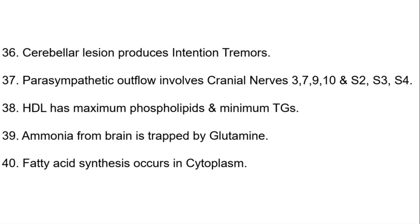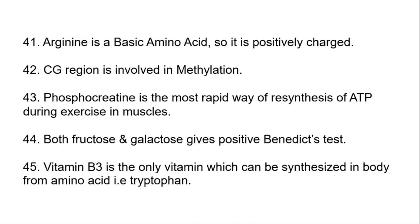Parasympathetic outflow involves cranial nerves 3, 7, 9, and 10, and sacral nerves S2, S3, and S4. HDL has maximum phospholipids and minimum triglycerides. Ammonia from the brain is trapped by glutamine. Fatty acid synthesis occurs in the cytoplasm.